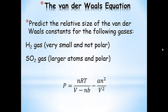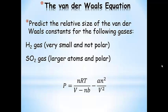Let's do some conceptual practice problems. We're going to predict the relative size of the Van der Waals constants A and B for the following gases. The first is hydrogen gas, which is really small and not polar — it doesn't have areas of partial positive and partial negative charge. The second is sulfur dioxide, which has larger atoms and is polar.